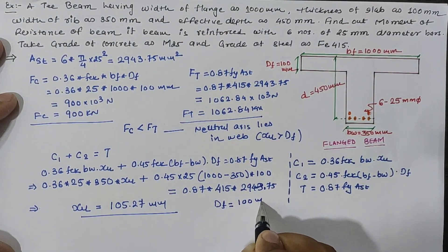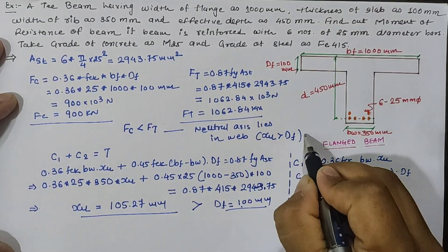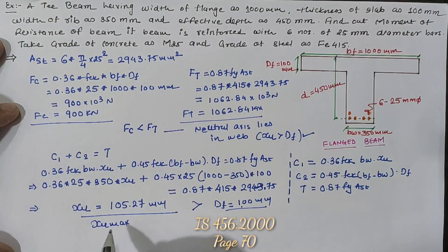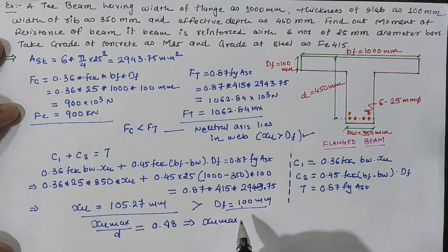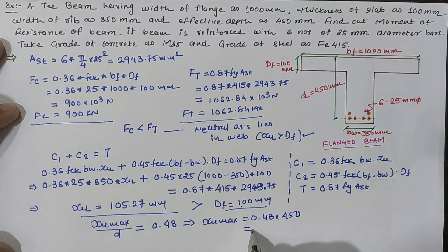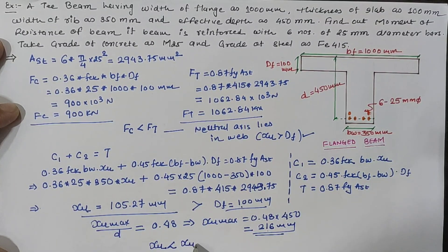And depth of flange df is given as 100 mm, so our xu is greater than df, it means it is okay. From page number 70 we can calculate xu max by d for Fe415 as 0.48, so our xu max is 0.48 into d as 450, which is equal to 216 mm. Here xu value is less than xu max value.